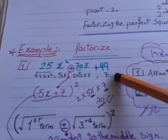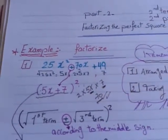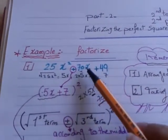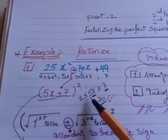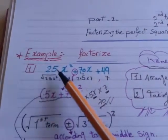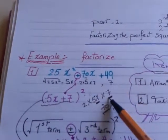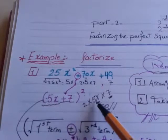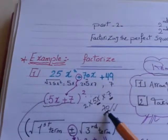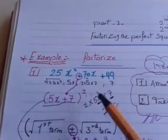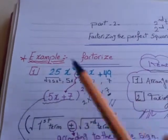Okay, think about the middle term. If the middle term comes from number 2 times root of the first, which is 5x, times root of the third, which is number 7. Yeah, 2 times 5 times 7 equals 70. So the 70 in the middle here, so this term is a perfect square trinomial.